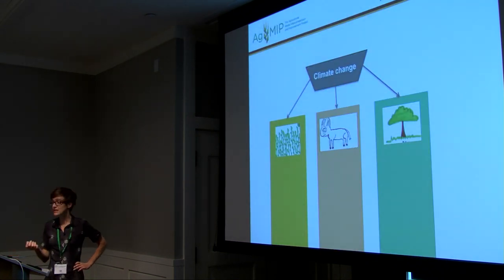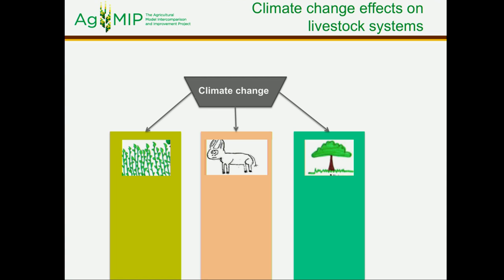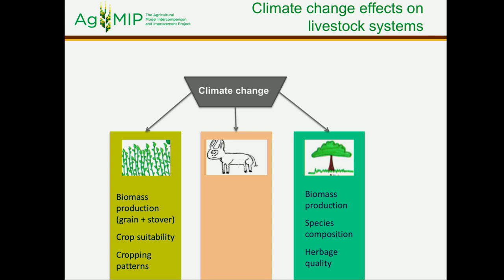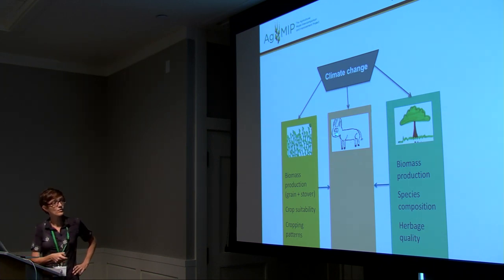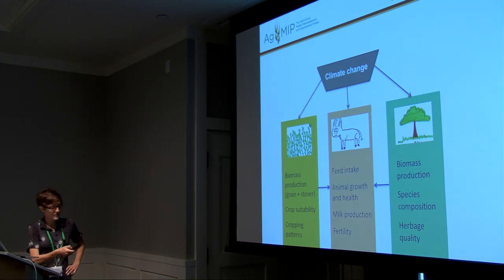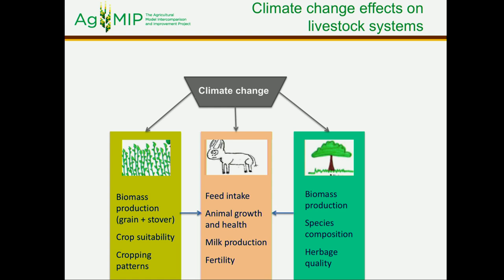How will climate change impact livestock systems? I try to simplify that in this cartoon. In livestock systems, we will have the impact on crop production in terms of biomass production, but also crop suitability and cropping patterns. There will be an impact on the biomass production of rangelands and pastures, but also the species composition and herbage quality will change. These are the indirect effects of climate change through impacts on feed availability and feed quality. There is also a direct impact through increased temperatures and heat stress on the animals.